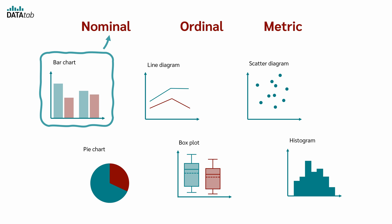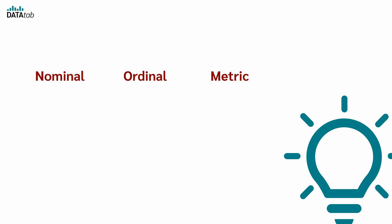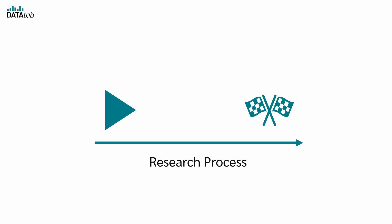The level of measurement also tells us which hypothesis tests are possible and determines the most effective type of data visualization. For example, bar charts are great for Nominal data, while histograms are better suited for metric data. So each level provides different information and supports various types of statistical analysis.